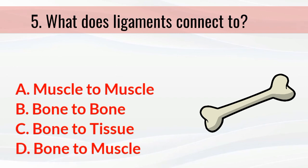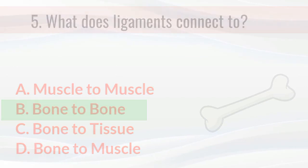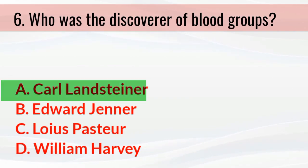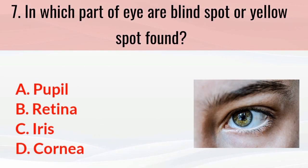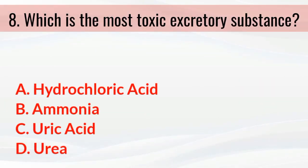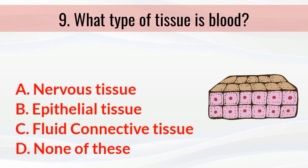What does a ligament connect? The answer is bone to bone. Who was the discoverer of blood groups? The answer is Karl Landsteiner. In which part of the eye are the blind spot and yellow spot found? The answer is the retina. Which is the most toxic excretory substance? The answer is ammonia.